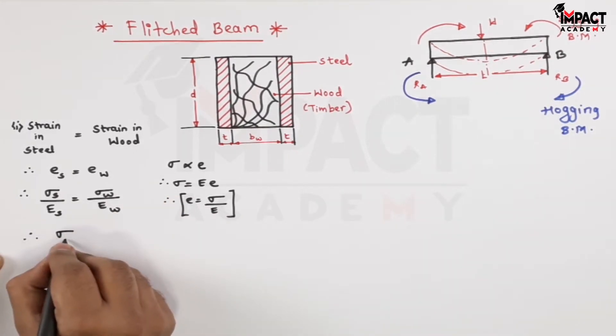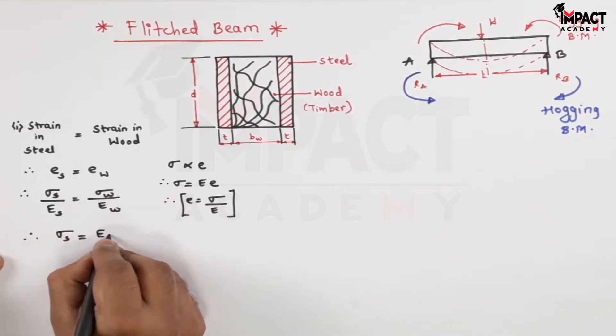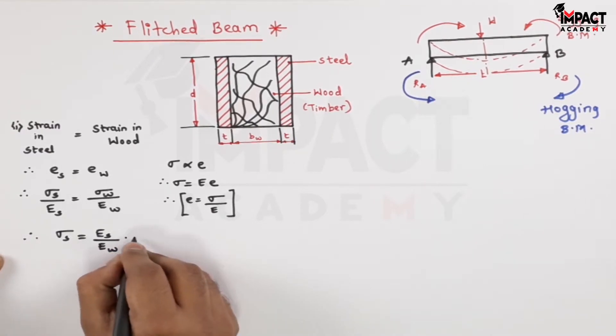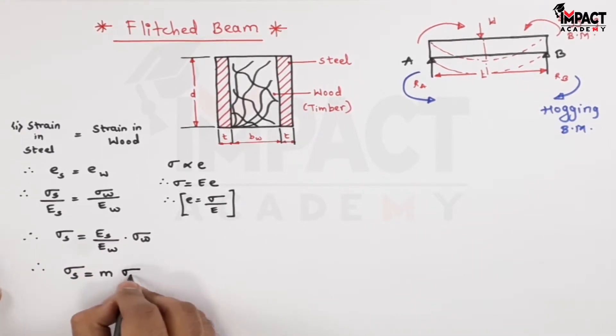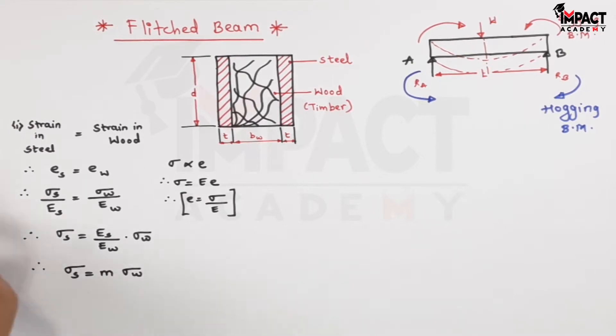This E_s when it goes on to the other side it becomes E_s upon E_w into σ_w. Therefore σ_s would be E_s by E_w is denoted by a ratio m and this ratio is called as the modular ratio.